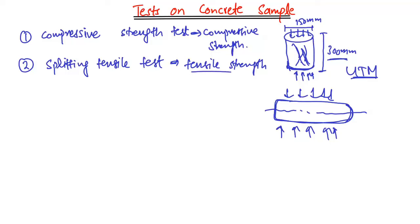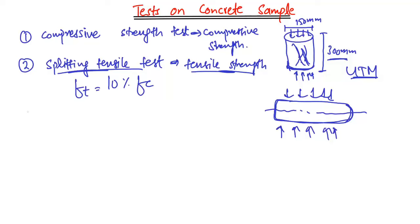The tensile strength of the concrete is then determined by a formula. Although concrete is very weak in tension, sometimes we need that value. The tensile strength of concrete is typically about 10% of its compressive strength.